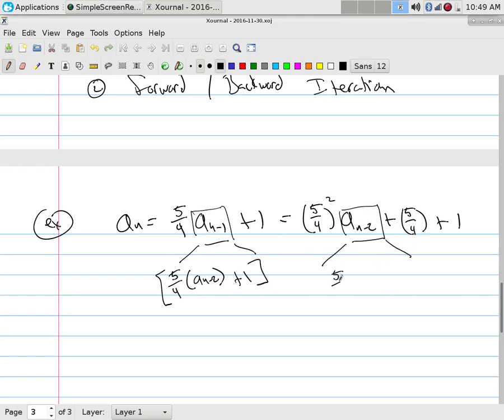But what's a_(n-2)? It is 5/4 of a_(n-3) plus 1. It's always 5/4 of the previous plus one. If I take (5/4)^2 and distribute that through, I would get (5/4)^3 times a_(n-3) plus (5/4)^2 plus these two guys tagging along: 5/4 plus 1.